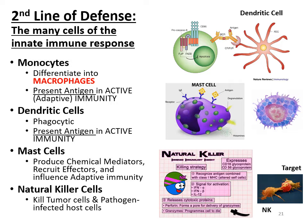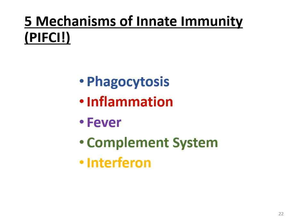Now, how exactly is innate immunity protecting us? There are five mechanisms of innate immunity, which you can remember as PIFKE: Phagocytosis, Inflammation, Fever, complement system (K), and interferon (E). Make sure you're comfortable knowing these five mechanisms and exactly how they're trying to protect you.